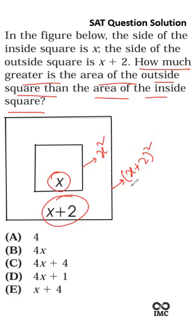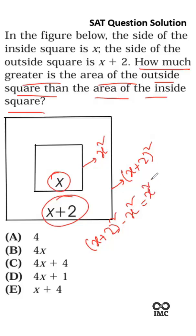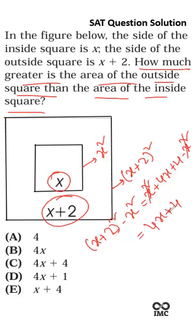So we can say the area of the largest square is x plus 2 whole squared, and the area of the smaller square is x squared. We need to calculate x plus 2 whole squared minus x squared. Expanding: x plus 2 whole squared equals x squared plus 2 times x times 2, which is 4x, plus 4. So we get x squared plus 4x plus 4 minus x squared.